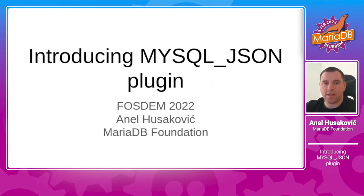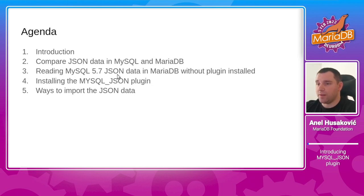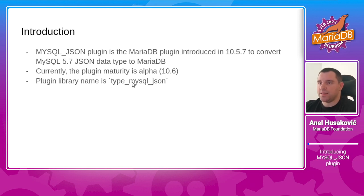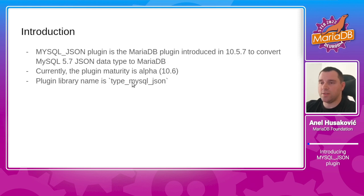Hi, my name is Ana Vlisankovic and the topic for this talk is the MySQL JSON plugin. The agenda for this talk is the introduction, then we will see how to compare JSON data in MySQL and MariaDB, how to read MySQL 5.7 JSON data in MariaDB without the plugin, how to install the MySQL JSON plugin, and the ways to import JSON data in MariaDB. The MySQL JSON plugin is a MariaDB plugin introduced in version 10.5.7 to convert MySQL 5.7 JSON data to MariaDB. Current plugin maturity is alpha for version 10.6, and the shared library name is type_mysql_json.